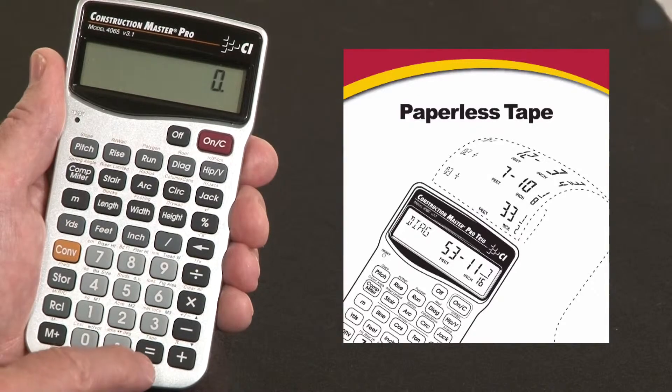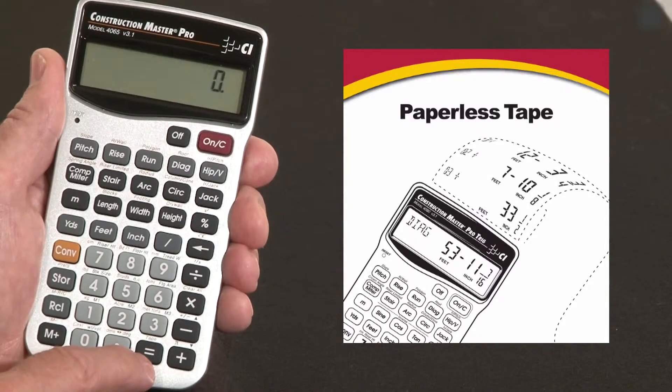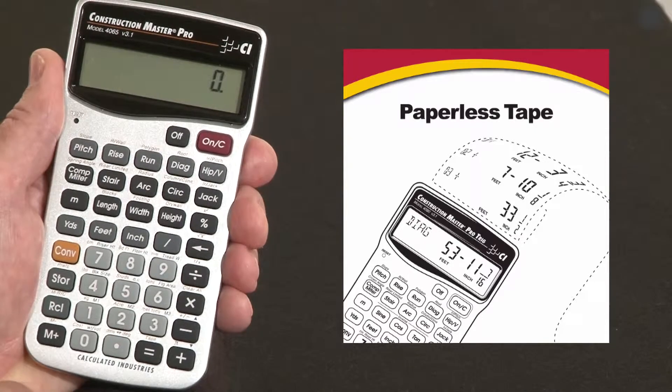If you use the paperless tape function, right over the equal key here, you can double-check your answers without doubling your work.